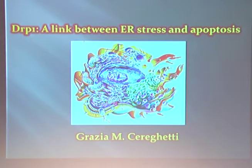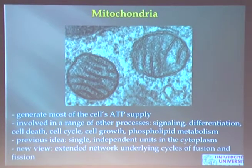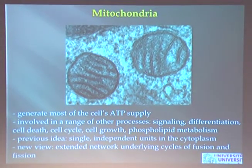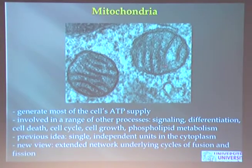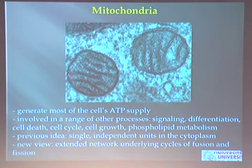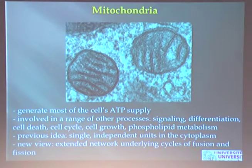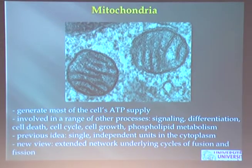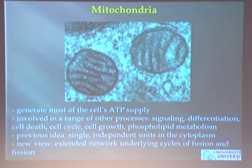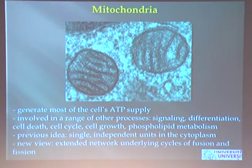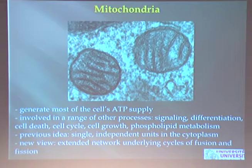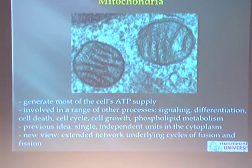So just some basics. Mitochondria — you have heard a lot about them in the previous talk. Here you see an electron microscopy picture of them and you have the impression that mitochondria swim in the cytoplasm as single independent units. This was the old view of mitochondria, but in the last decades people developed fluorescent proteins that can be targeted to subcellular organelles with specific tags, and this allows to watch what organelles do in live cells.